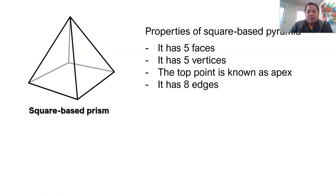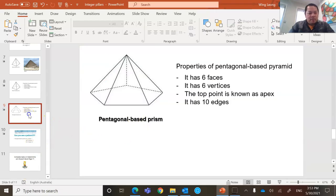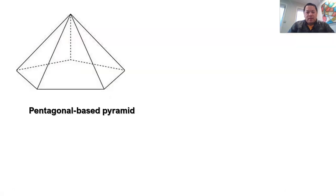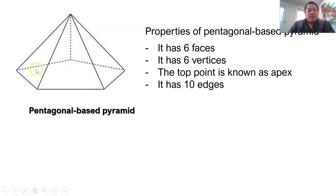Now I'm going to introduce a pentagonal based pyramid. There are six faces — five triangles and the base pentagon. Vertices: the five corners of the base plus the top apex gives six. The top point is again known as the apex — there is always an apex for a pyramid. And there are ten edges: one, two, three, four, five, six, seven, eight, nine, ten.